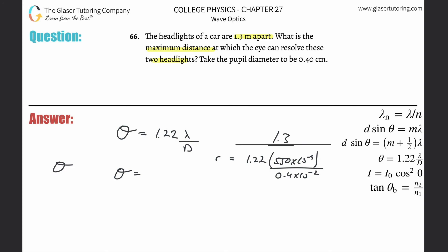So 1.3 divided by, now parentheses, 1.22 times 550 times 10 to the minus ninth divided by 0.4 times 10 to the minus two, close those parentheses. And we get a distance here between the car and the person of about 7.75 times 10 to the third meters. That's about 7.75 kilometers.